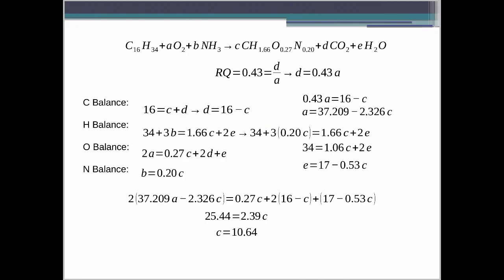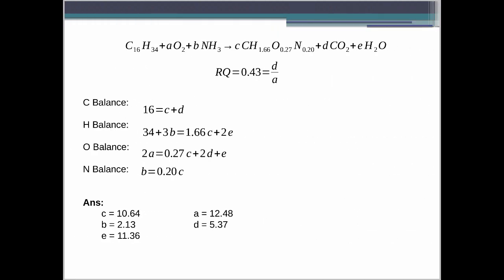For the final equation, substituting everything into the oxygen balance in terms of C: 2(37.09 − 2.326C) = 0.27C + 2(16 − C) + (17 − 0.53C). This gives one equation with one unknown, yielding C = 10.64. Substituting back, the stoichiometric coefficients are: C = 10.64, A = 12.48, B = 2.13, D = 5.37, and E = 11.36.